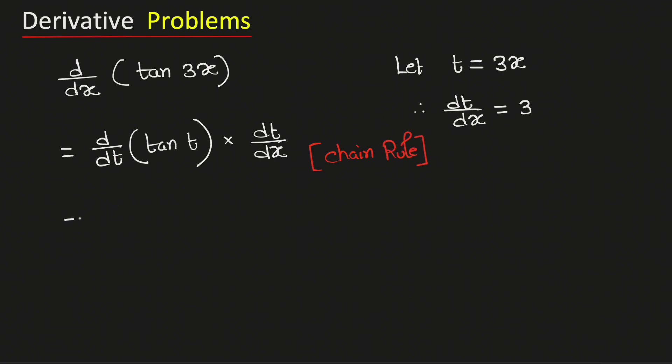We know that the derivative of tan is secant squared t, and dt/dx is equal to 3. Now if we put the value of t, which is 3x, the derivative of tan 3x with respect to x will be equal to 3 sec squared 3x, and this is our final answer.